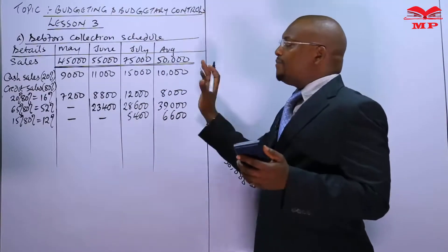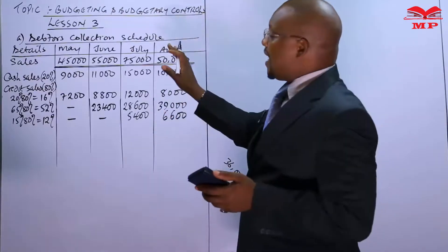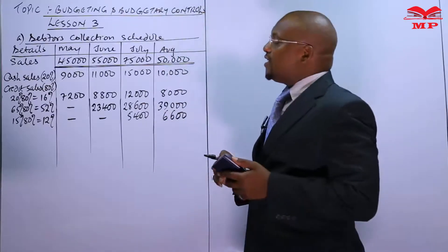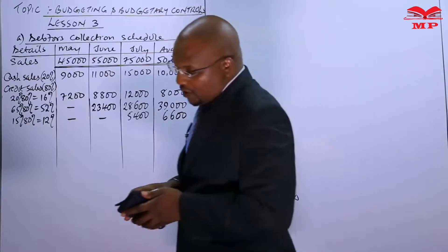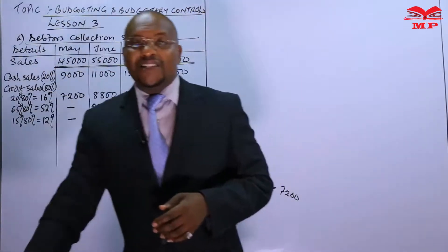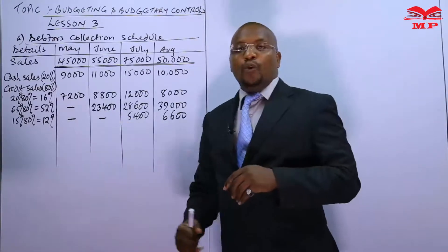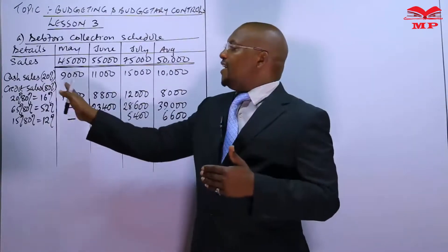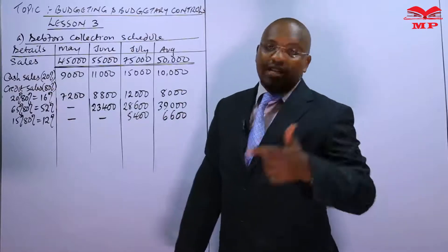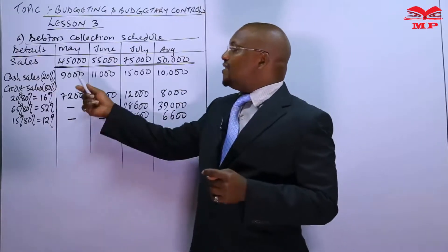That's how it is. So we are through with the sales of these months that are already recorded in this debtors collection schedule. But we also need to understand that the policy never started only in the month of May. We have been having this policy even in the previous months.